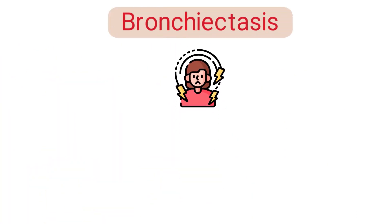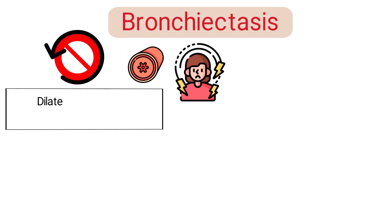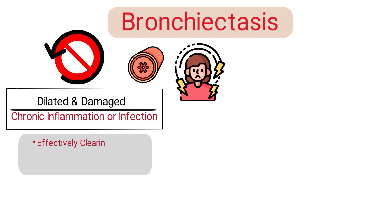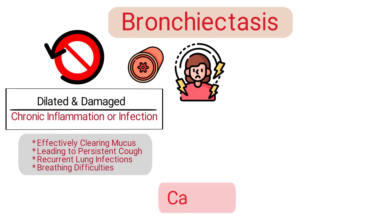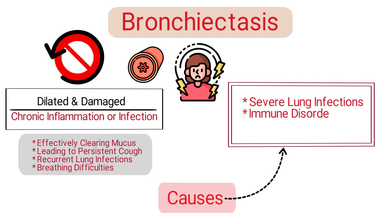And then we have bronchiectasis, which is a chronic condition where the bronchial tubes in the lungs become irreversibly dilated and damaged due to chronic inflammation or infection. This damage prevents the airways from effectively clearing mucus, leading to persistent cough, recurrent lung infections, and breathing difficulties. Causes can include severe lung infections, immune disorders, or conditions like cystic fibrosis.